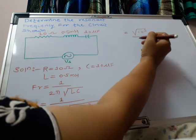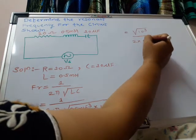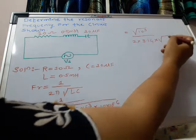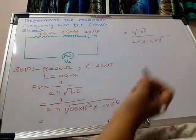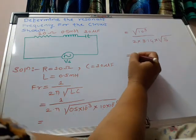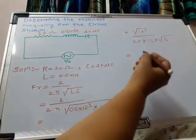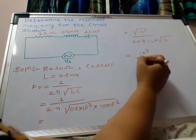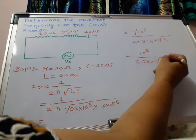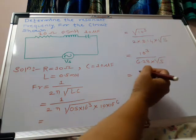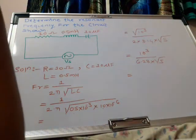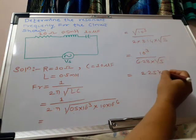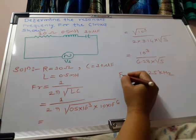Dividing by 2 times 3.14 times under root of 0.5 times 10, which equals 5. Using a calculator, we have 10 raised to power 3 in the numerator and in the denominator 6.28 times the square root of 5. Ultimately we get the answer as 2.25 kilohertz.